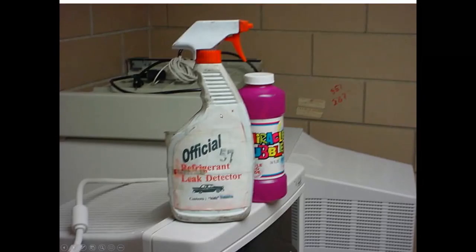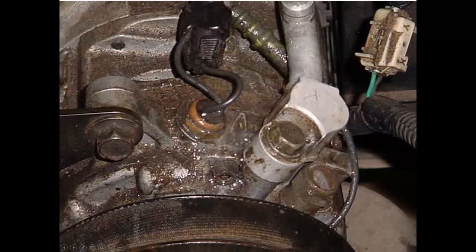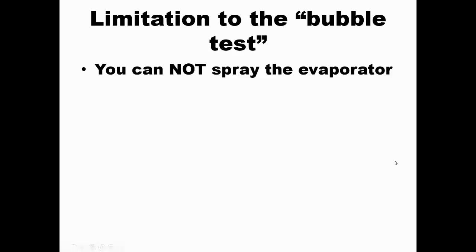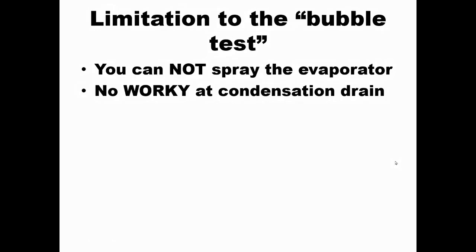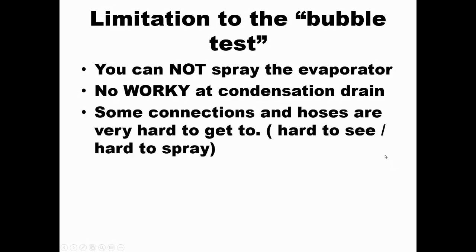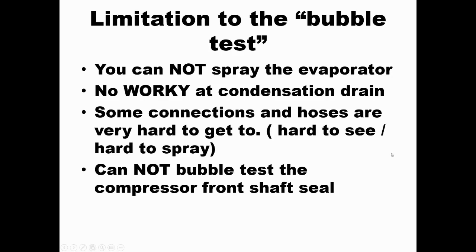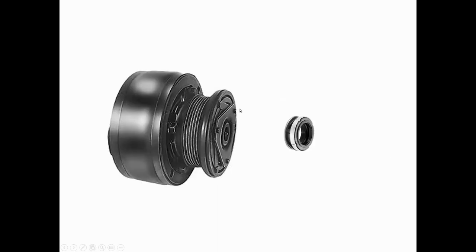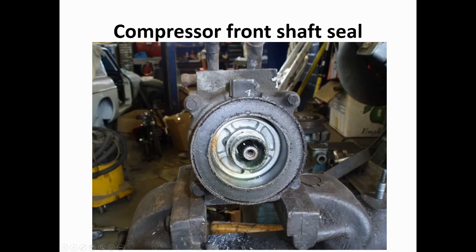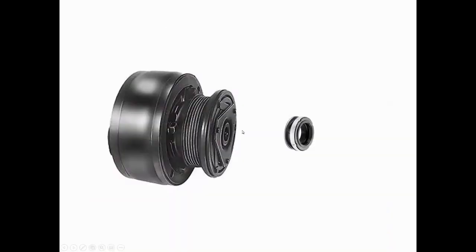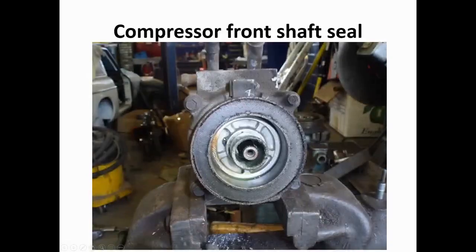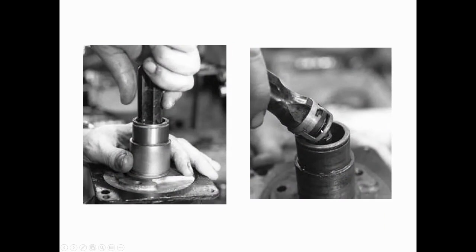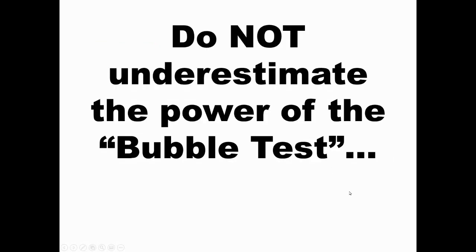The official refrigerant leak detector — 100% kids' bubbles, not diluted. Wait till you spray and see your first bubble. Of course, there's a limitation: the pesky evaporator. Spraying the condensation drain is not the right way — the bubble has to hit the exact point of leakage. Some connections are hard to get to; it's so hard you can't even spray them. You cannot test the compressor front shaft seal with bubbles. That seal is way down inside the neck of the compressor — spraying the front of the compressor expecting bubbles is not going to happen. Do not underestimate the power of a bubble — it works — but there is a limitation on the bubble.